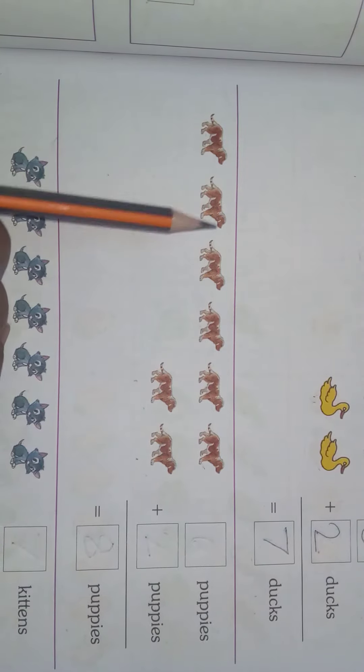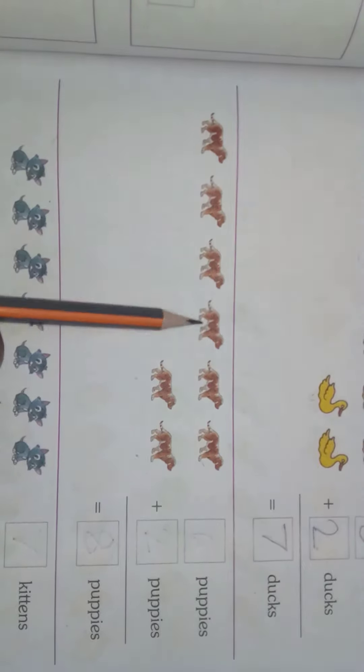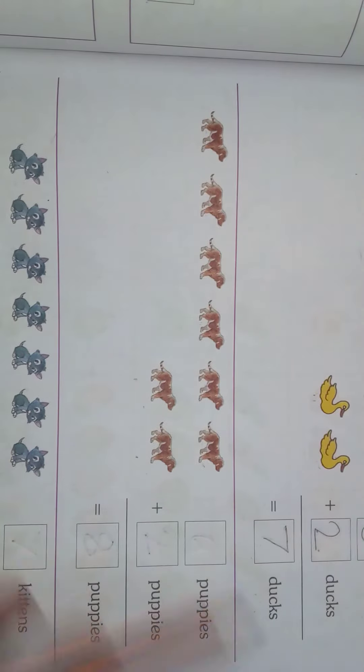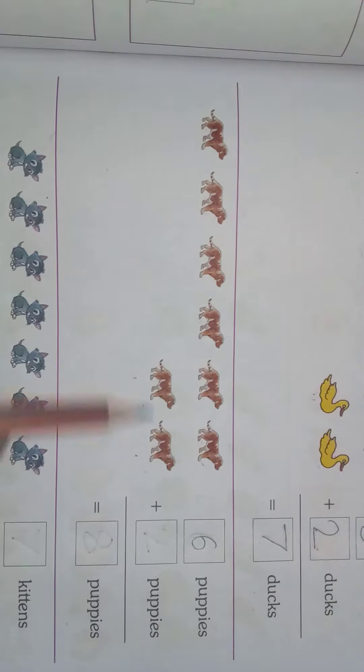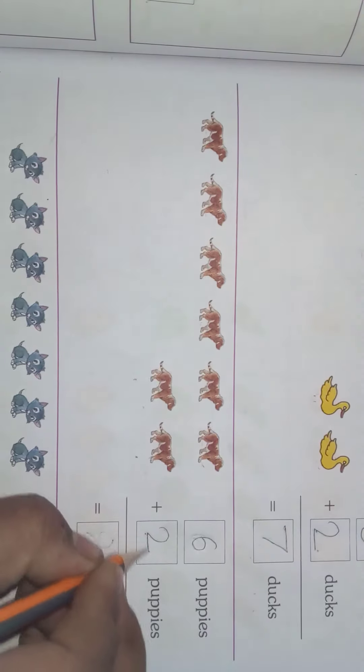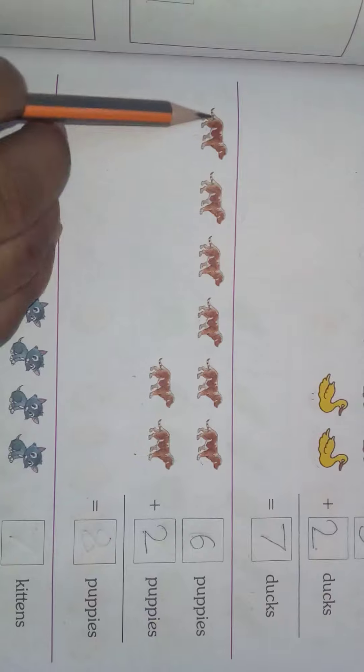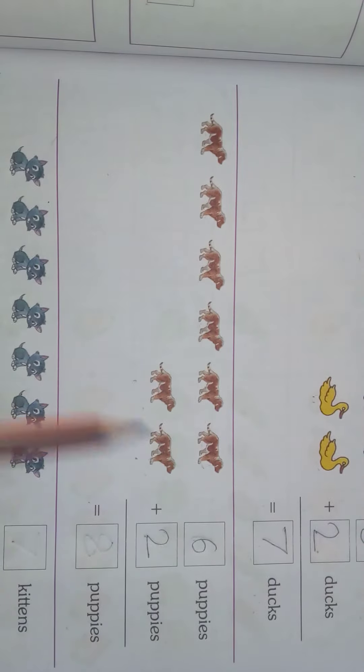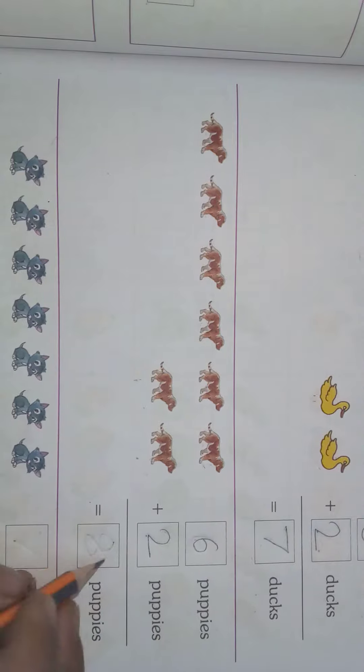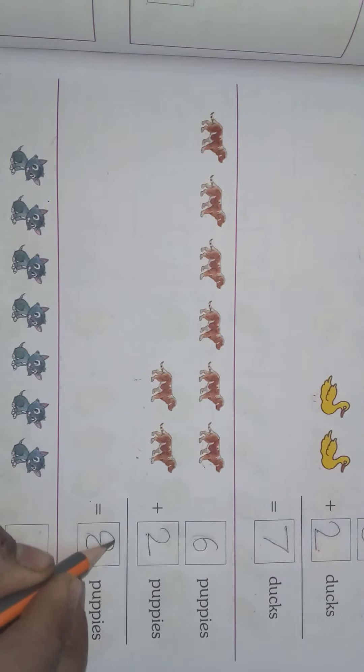Next here they have given puppies. We will count how many puppies are there. 1, 2, 3, 4, 5, 6 - six puppies, plus 1, 2 - two puppies is equal to 1, 2, 3, 4, 5, 6, 7, 8 - eight puppies.